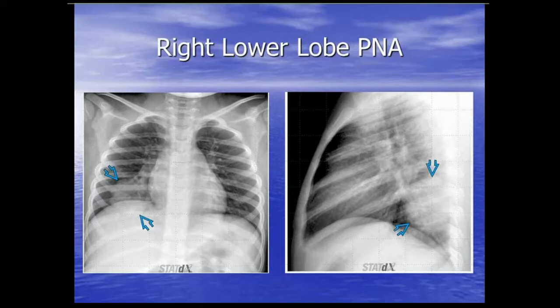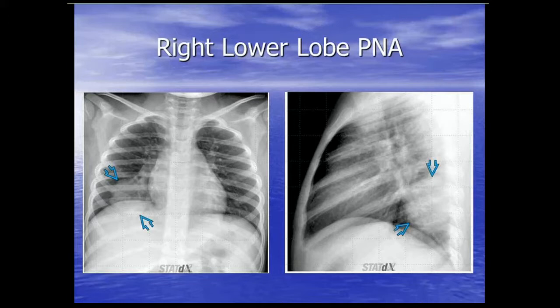This is more classic for pediatrics: a round lesion in the right lower lung. Based on the lateral, you can clearly tell it's in the right lower lobe — this was a round pneumonia. Kids get round pneumonias because they have pores of Kohn and canals of Lambert that haven't quite developed, so pneumonias can look like masses. We generally see this before age 8 and definitely not after 12. I would still get a follow-up chest x-ray in about six weeks to document resolution.